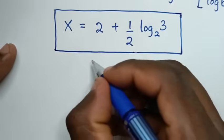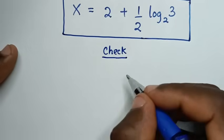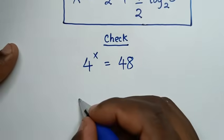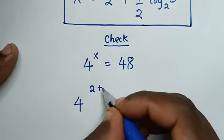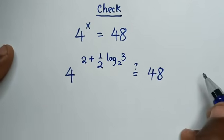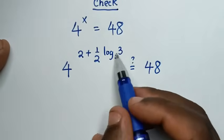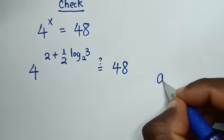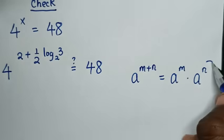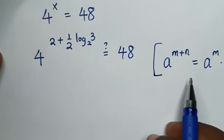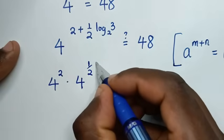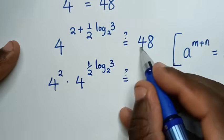Now let's check this answer. From our problem, 4 power x is equal to 48. We substitute x with 2 plus a half log of 3 base 2, so it will be 4 power of (2 plus a half log of 3 base 2) equal to 48. This is in the form of a power of m plus n, which equals a power of m times a power of n. So it becomes 4 power 2 times 4 power of a half log of 3 base 2, equal to 48.